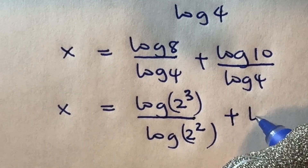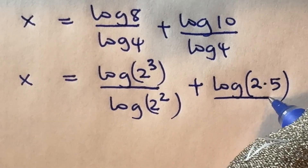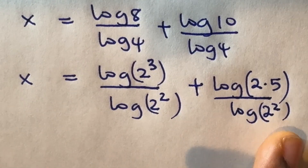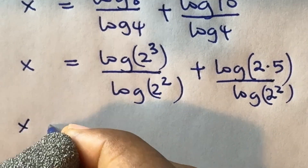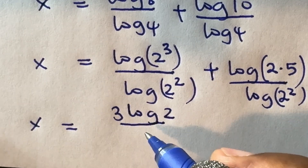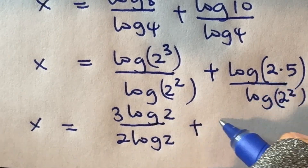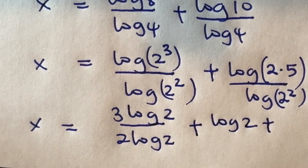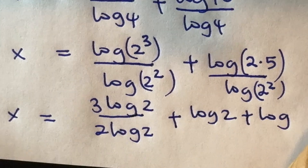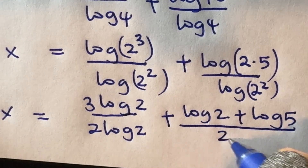And then further break down 10 as log 2 plus log 5. So we have log 2 divided by log 2. This gives us 3·log 2 divided by 2·log 2, plus — if we separate this — we have log 2 plus log 5, all divided by 2·log 2.